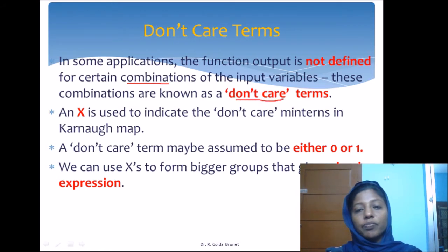These are minterms for which the output of the Boolean function is not defined. We treat them as don't care terms and mark them as X in the Karnaugh map. We can assume that a don't care term can take either 0 or 1 as the output.